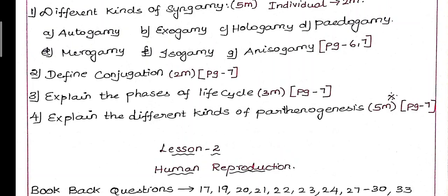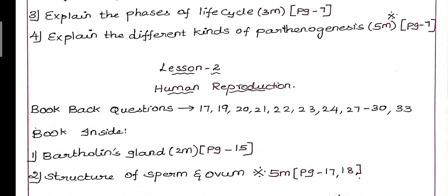Next, most important question of the chapter is 4th question. Explain the different kinds of parthenogenesis - parthenogenesis, artificial parthenogenesis, natural parthenogenesis and that type. There are 5 marks, page number 7. So you have a note on this page. If you have any doubt, comment.